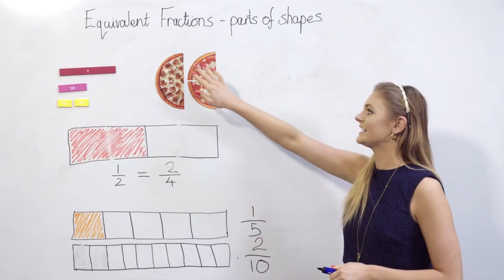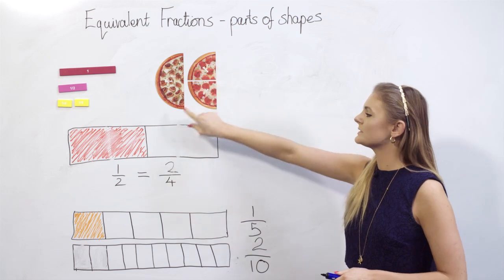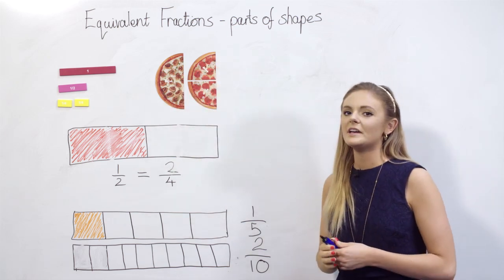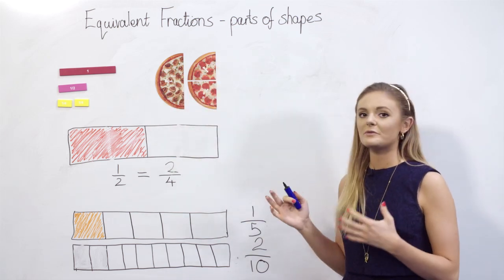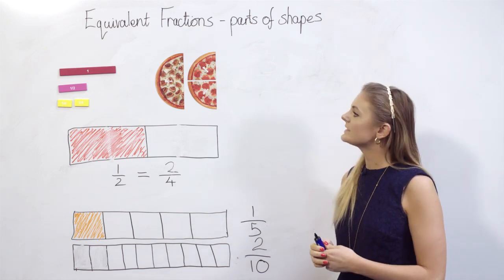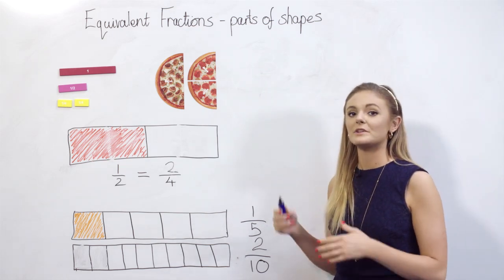For example, we've got our pizza slices here again. I have two quarters and one half and we can see that although these are different fractions, they're equivalent to one another because they refer to the same amount of the whole.